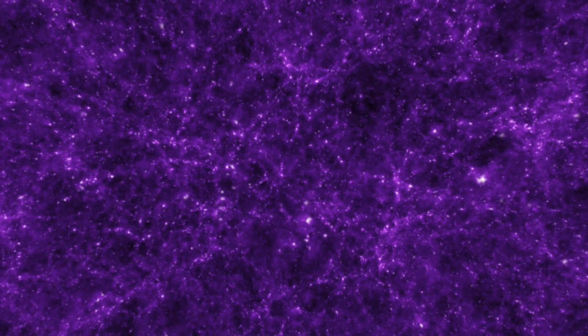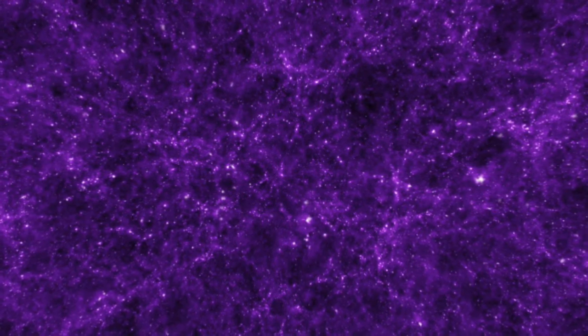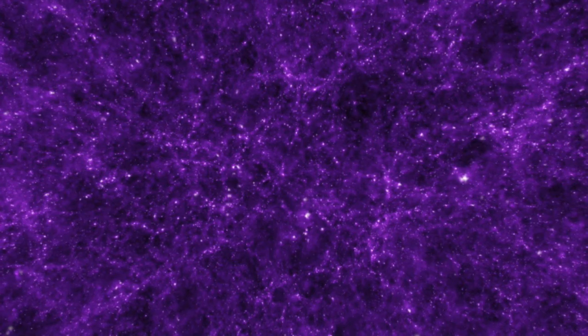But there are even bigger empty volumes of space than those between one galaxy and the next. On a large scale, the universe has a foam-like structure. The walls of the foam consist of galaxies, which are organized into massive branching arms called galaxy filaments. These can stretch over distances of tens or hundreds of millions of light-years.